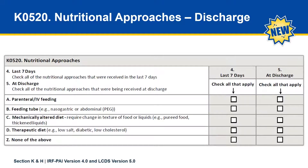K0520 looks a little different on discharge. While you are assessing these same elements, you're going to check the first column labeled number four for all that apply in the last seven days, and the second column labeled number five for all that apply at discharge. As with admission, you would check Z if none of these apply for either column.